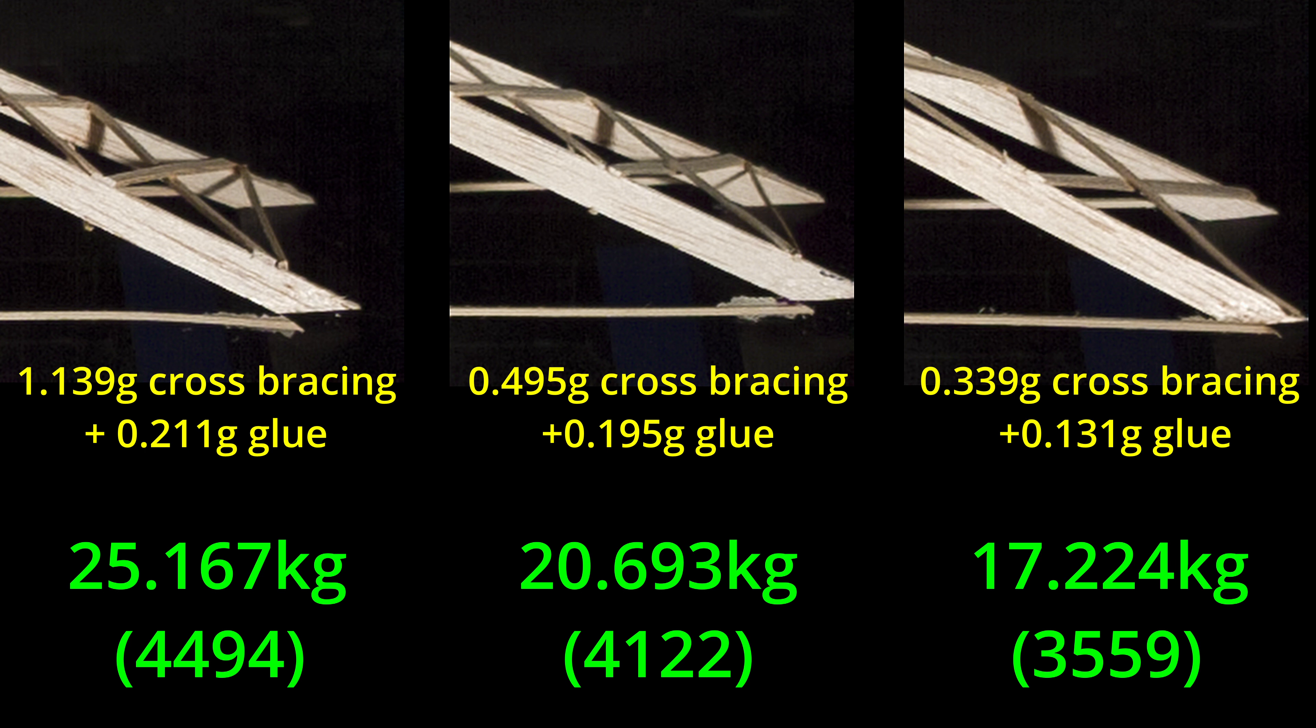So what must be happening is that as the cross bracing is being reduced, the leg is deforming more and that deformation is inducing the start of the tension detachment. It does appear that you can even see a higher amount of twisting in the lightest cross bracing test on the right.